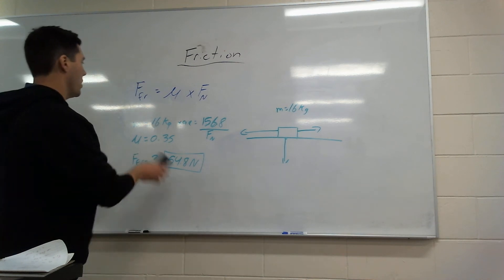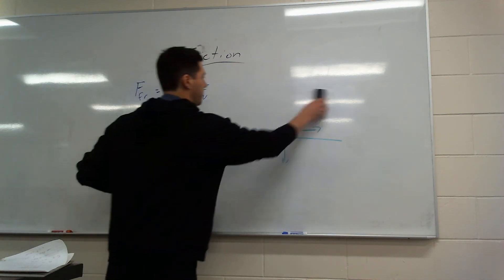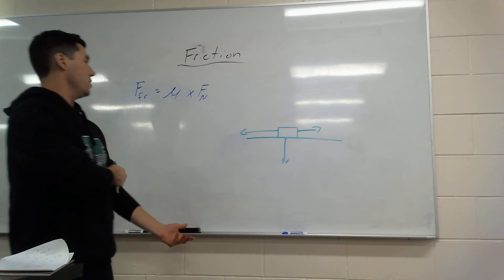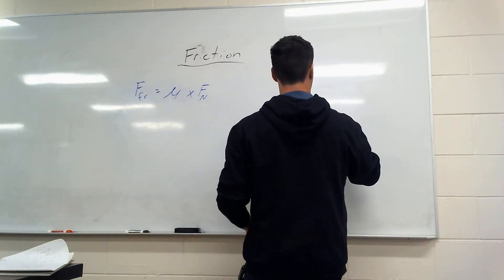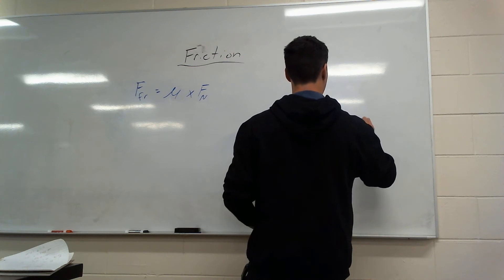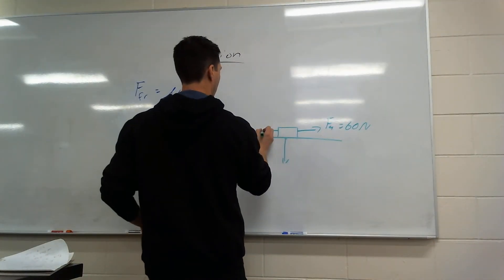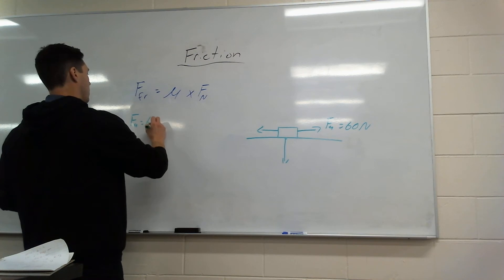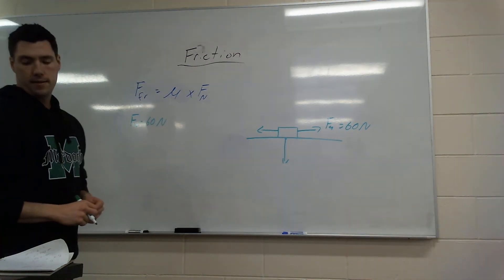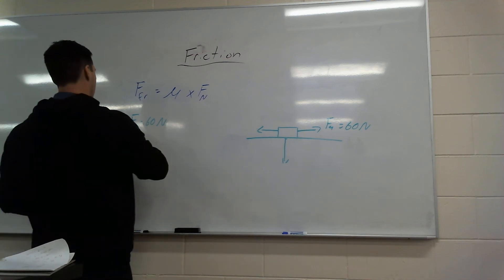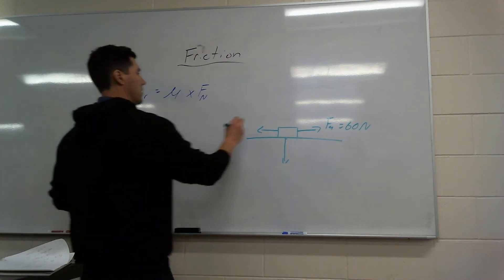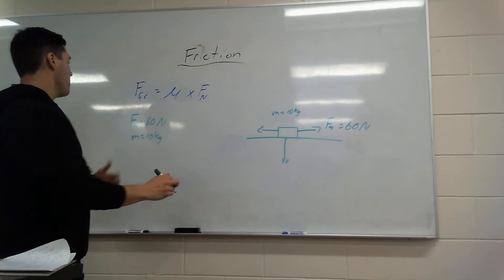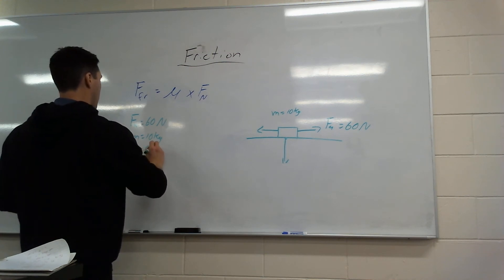Question three, last one. We're actually going to do a question where we have to find an acceleration. So in this question three, it says someone is pulling with a force applied of 60 newtons. It says that there's a mass of 10 kilograms. And it says we have a mu of 0.45.